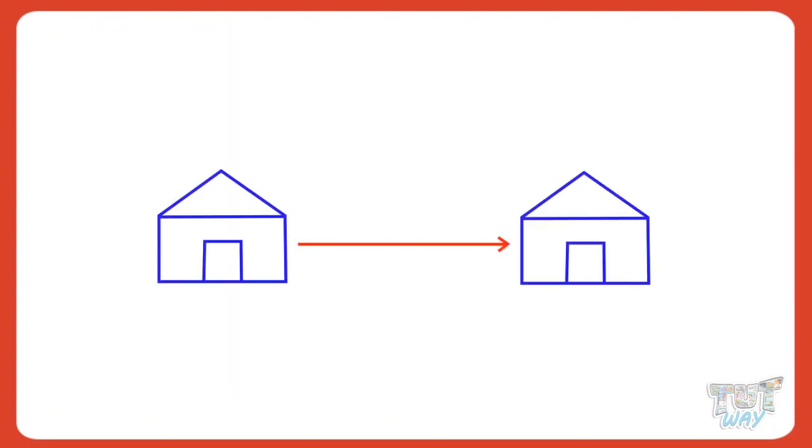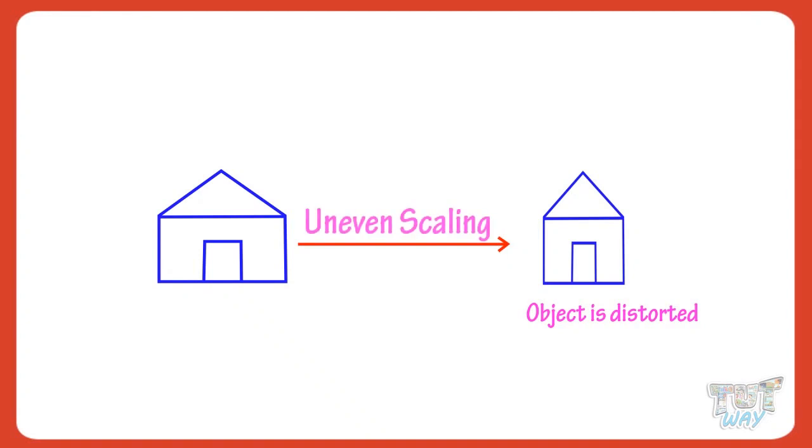If we differently change the different dimensions of a figure, then the object is distorted, that is, the shape of the object is changed, and such scaling is uneven scaling.